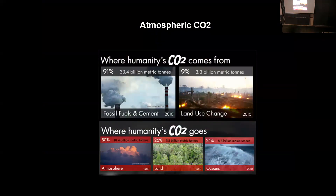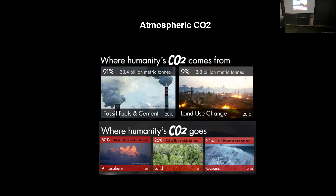I'm sure a lot of this is review for some of you. Humanity produces carbon dioxide. Any source of carbon, whether that source is coal or gasoline — if you oxidize it, you burn it: carbon plus oxygen equals carbon dioxide. About 90% of that comes from fossil fuels and cement, about 10% from deforestation. About 50% stays in the atmosphere, a quarter goes back into the land through photosynthesis, and about a quarter is making the oceans and water sources more acidic.